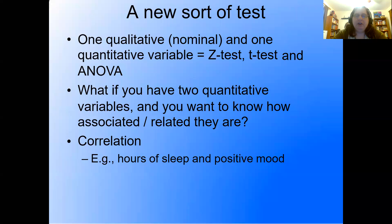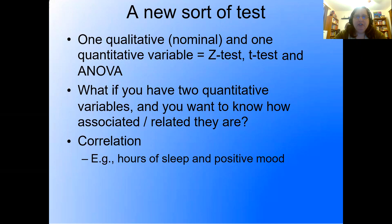With factorial ANOVA we had two qualitative nominal variables. But for the most part, that's what we've been dealing with. Now we're going to ask: what if you have two quantitative, two continuous variables, and you want to know how associated or related they are? That would be a job for correlation.